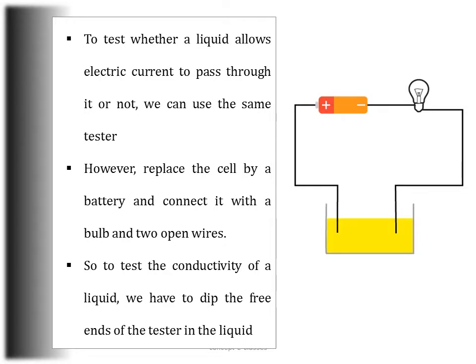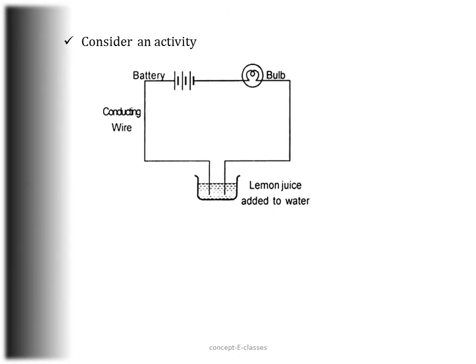To test whether a liquid allows electric current to pass through it, we can use the same tester, but we should replace the cell with a battery. The rest is the same — we have a bulb and two open wires. In the solid state we connect the wires to the material being tested, but in the liquid state we dip the free ends of the tester inside the liquid.